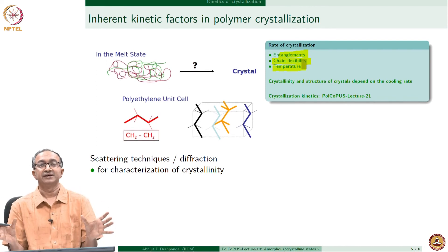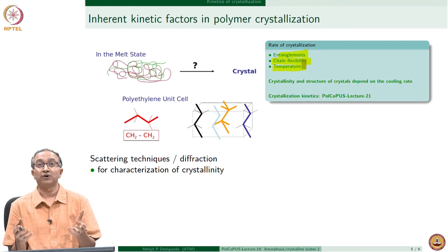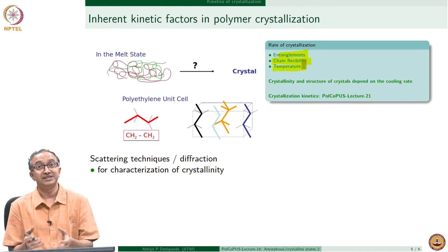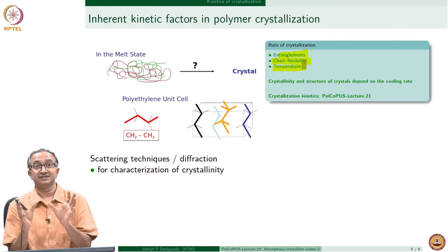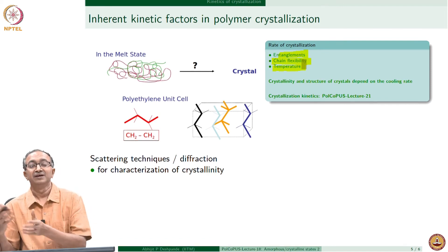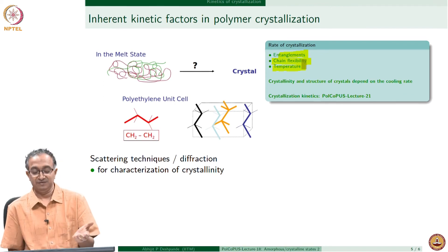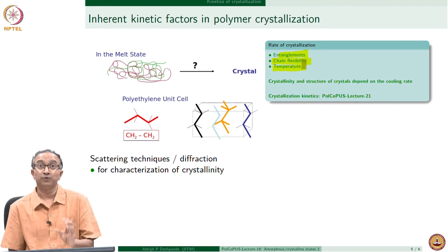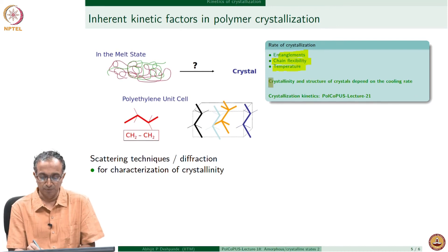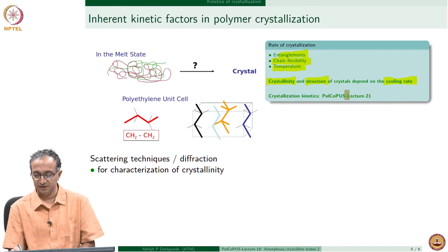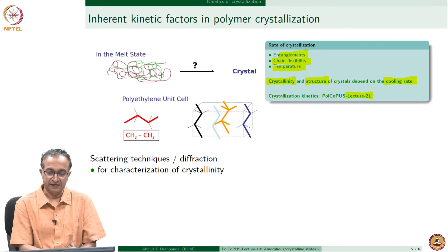If we compare two different polymers, chain flexibility differs because of the side groups or backbone bonds. Polyethylene has C–C single bonds, giving much more flexibility. Polyether ether ketone has benzyl groups in the backbone and therefore much less flexibility than polyethylene. Chain flexibility is one factor and temperature is another. What is most important for polymers is that both the amount of crystallization and the structure of those crystals depend on the cooling rate — a topic we will discuss in much more detail in an upcoming lecture.